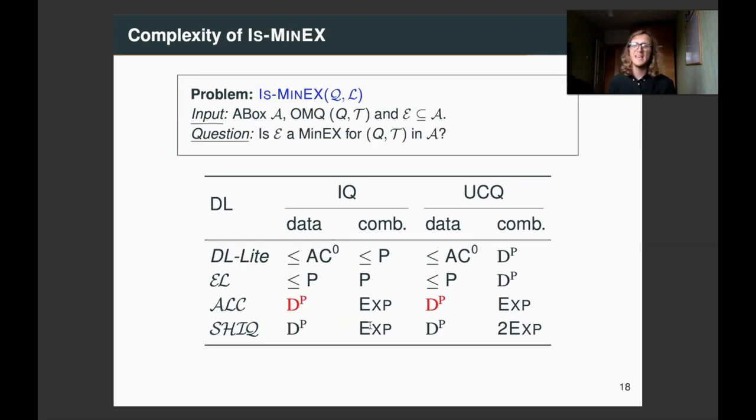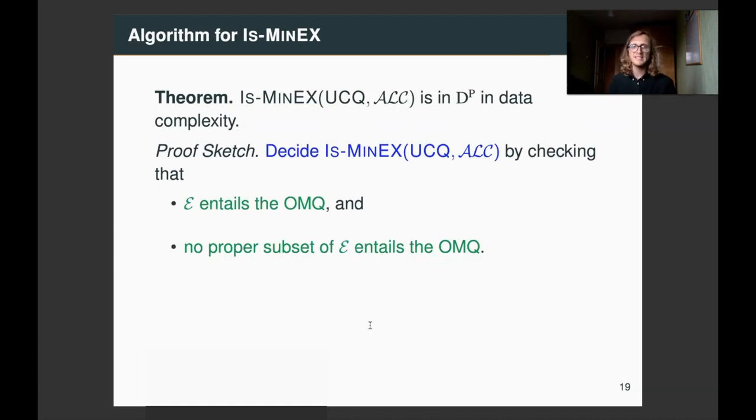So, the first problem is isminex, and we show that in that case, the complexity is DP, where DP is a conjunction of NP and co-NP. Now, we just show membership result, while in the paper we provide also hardness. We show that isminex is in DP. So, to decide isminex, we need to check that a given subset of the A-box entails the query, and no proper subset of it can entail the query.